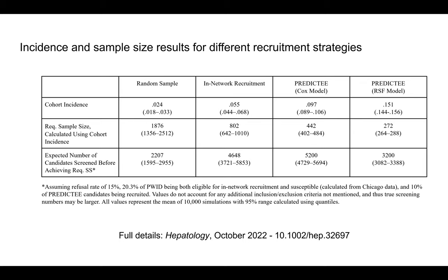As seen in our results, random survival forest did result in better incidence and sample size outcomes, while also resulting in significant improvements to demographic constraints. In our simulations, we trained these models by using 20% of our Chicago PWID data, while we used the remaining 80% as the recruitment pool for our simulated trials.